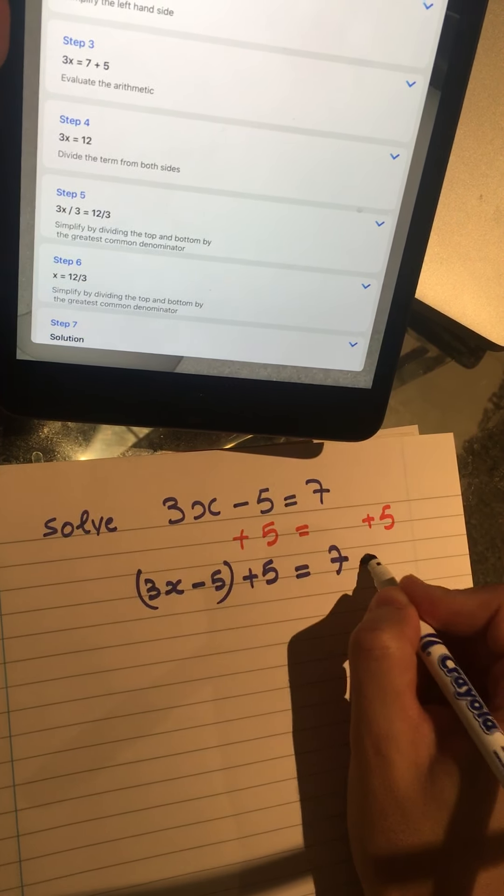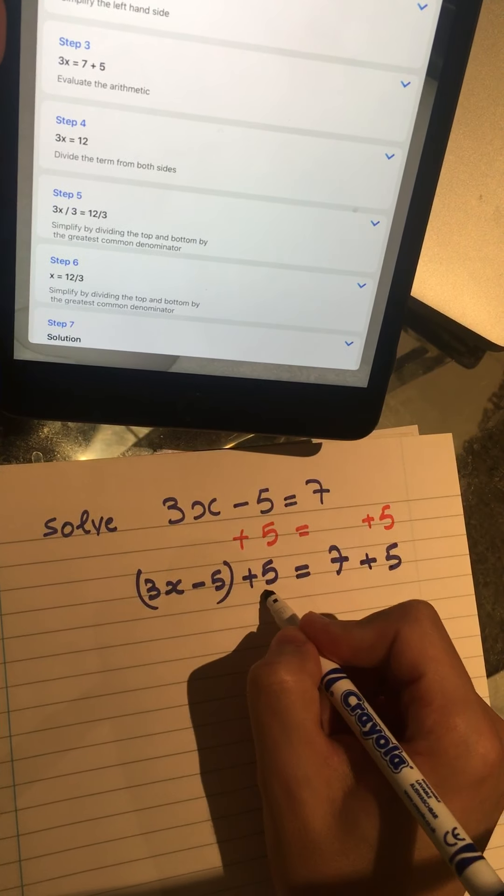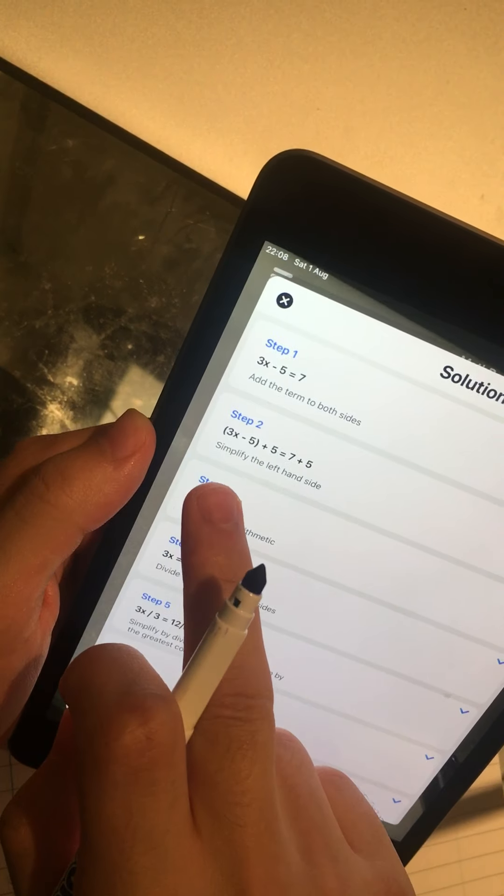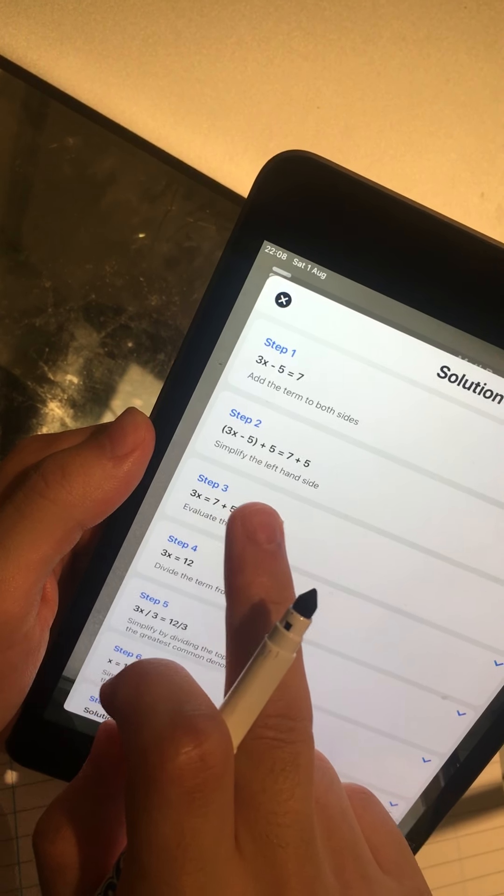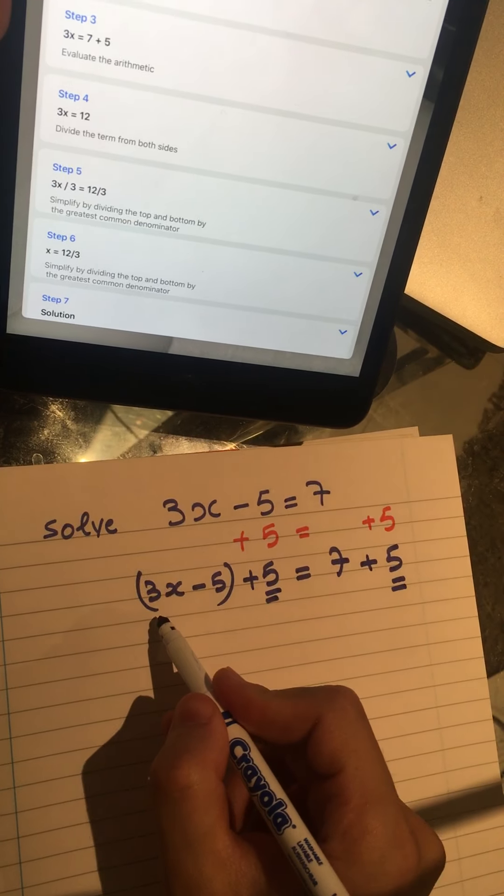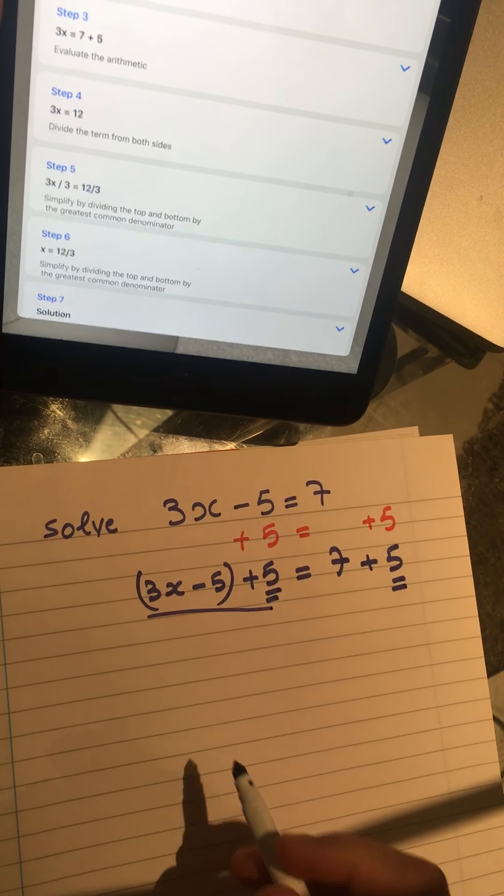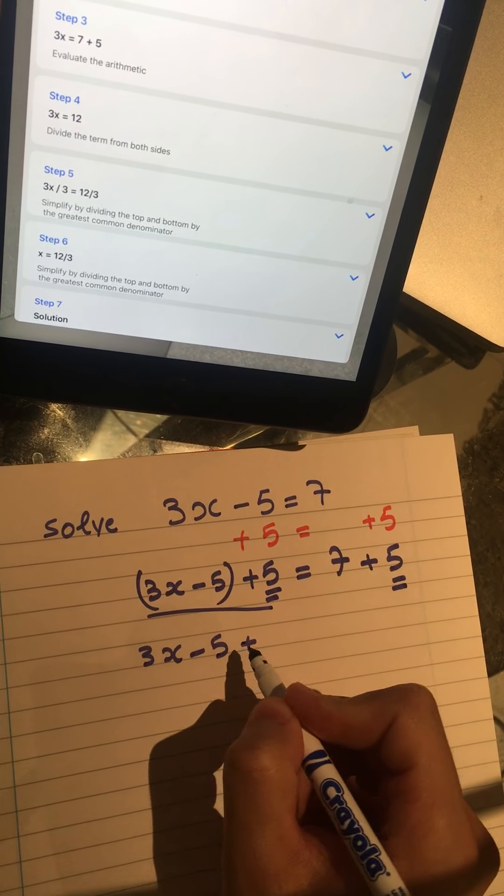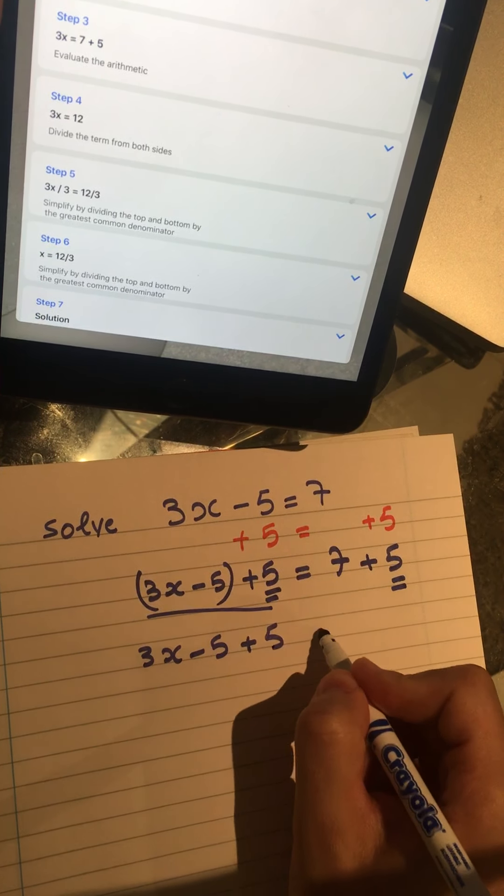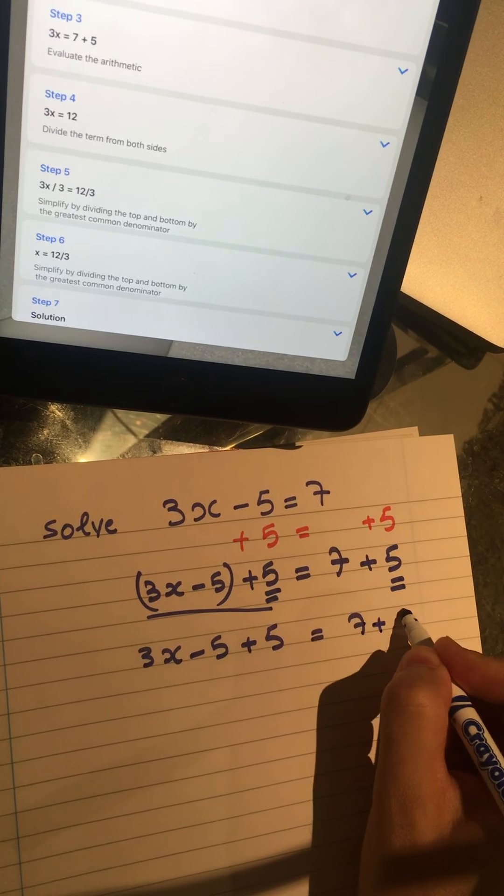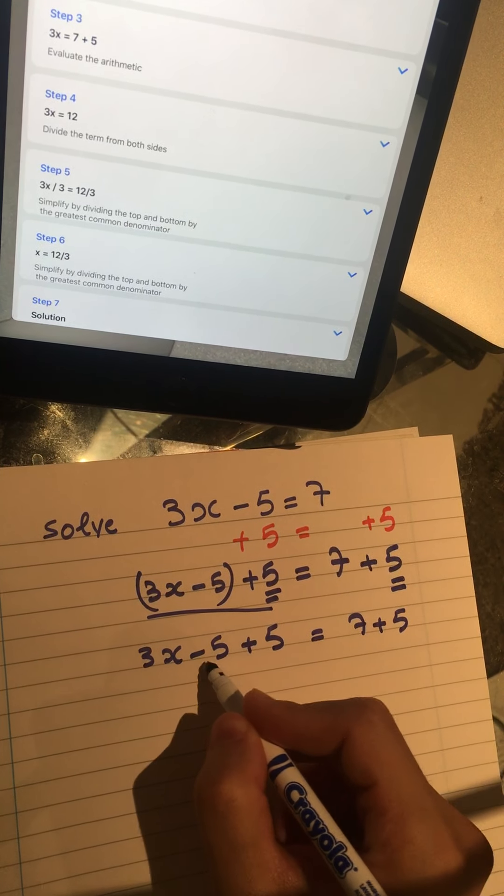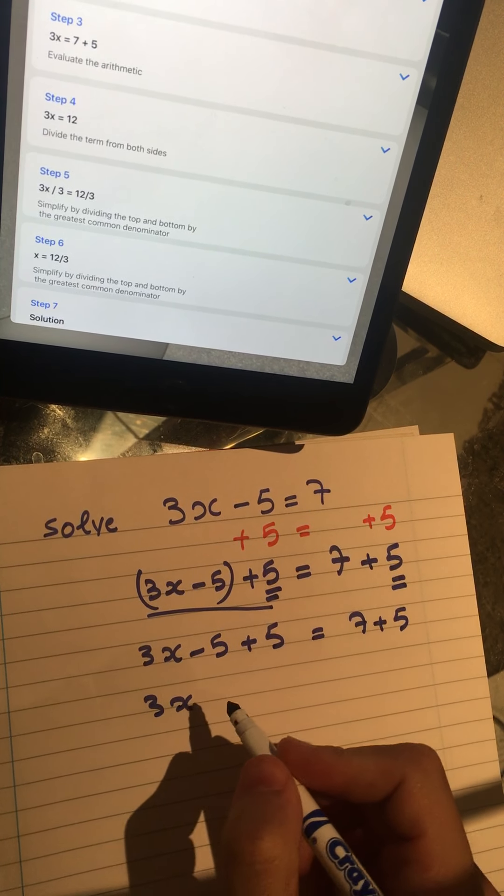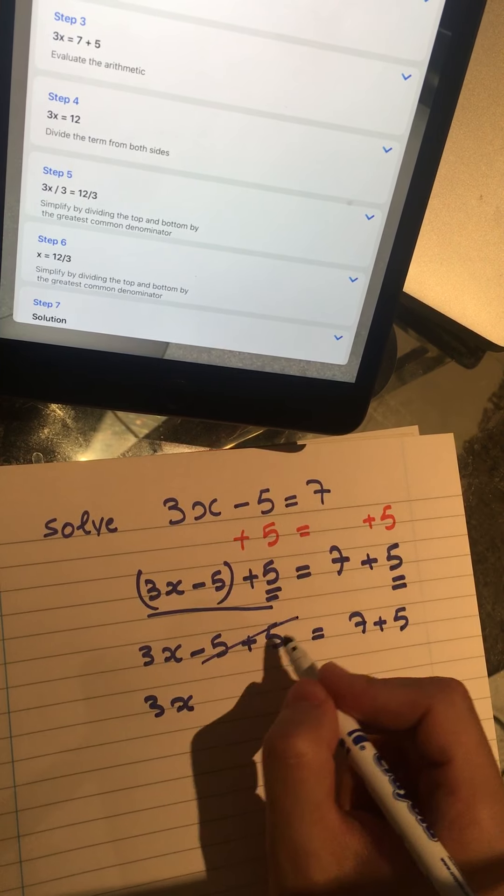The second step is simplify the left-hand side. So let's simplify this part. This part will be 3x minus 5 plus 5 equals 7 plus 5. Minus 5 and plus 5 will be equal to 0, so it will be 3x. This one will be equal to 0, equal to 7 plus 5.